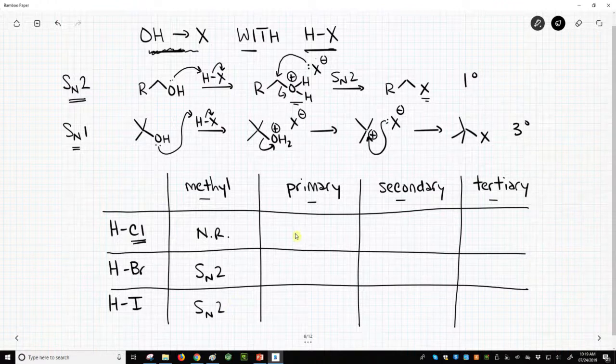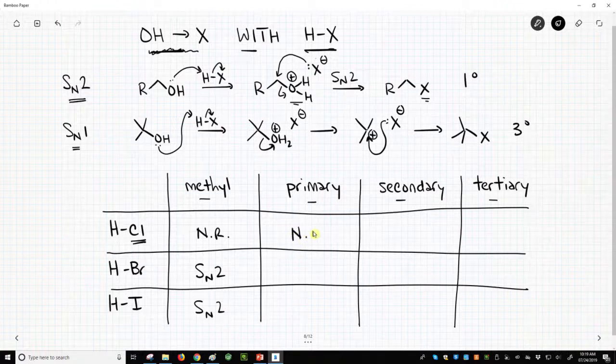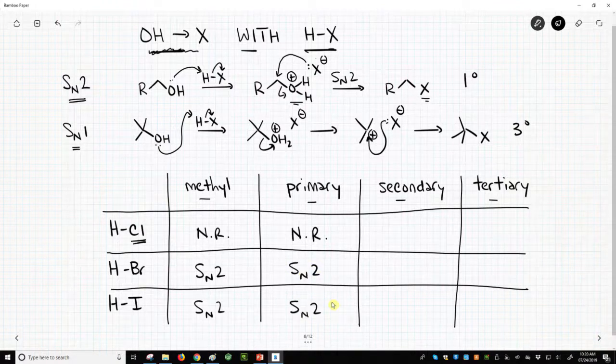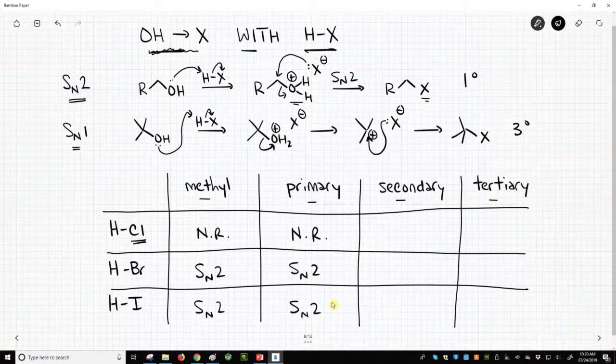How about a primary halide? Well, too bad. HCl chloride is not a good nucleophile. HBr and HI can still both do substitutions on primary alcohols, and it'll follow an SN2 pathway.